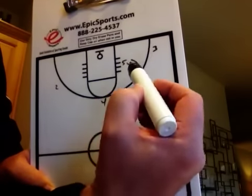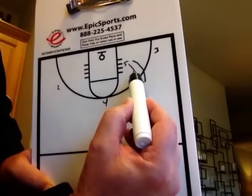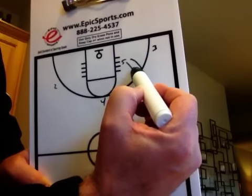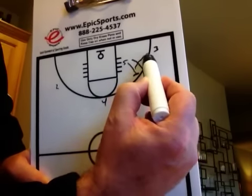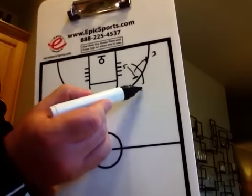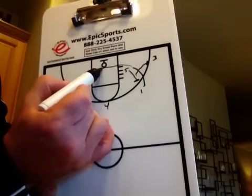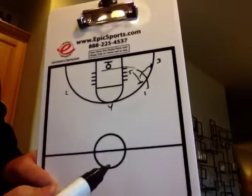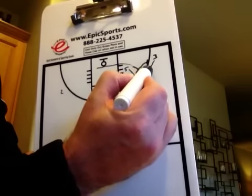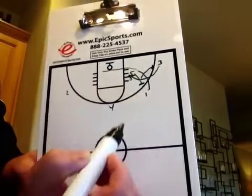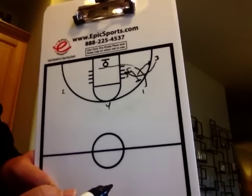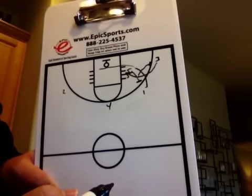Now the second part is, as soon as that screen is set by number five, number five is then going to pop over and set a screen for three. So one's going to cut and continue through, and if he doesn't get a pass, three's going to use this screen and go this way, loop around using that screen, heading towards the basket and hopefully a layup.